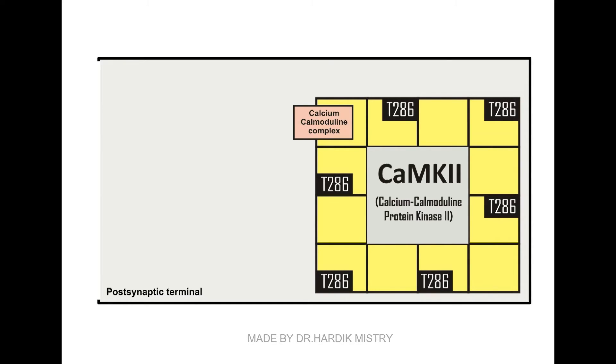When calcium-calmodulin dissociates after calcium drops, the subunit becomes inactive. Active calcium-calmodulin protein kinase 2 can phosphorylate a threonine residue at amino acid 286 in the auto-inhibitory domain of neighboring subunit. T286 phosphorylation impairs the auto-inhibitory function so that activity of the phosphorylated subunit persists even after calcium-calmodulin dissociates.